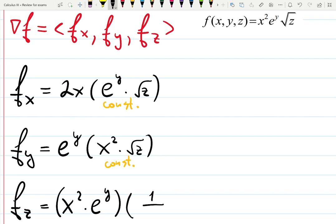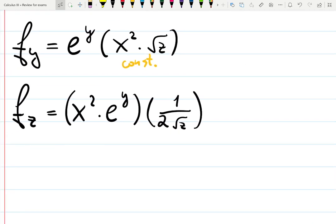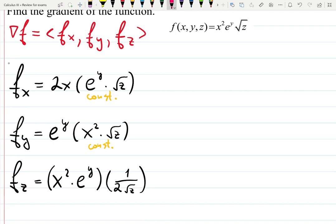Derivative of square root of z is 1 over 2 square root of z. If you don't understand this, carefully create a product rule, and you will have 1 half multiplied by z to the minus 1 half. Wait, I confused myself with a simple thing.